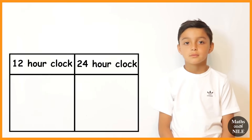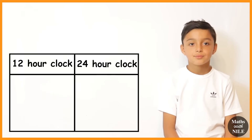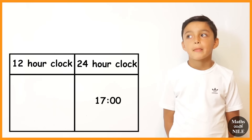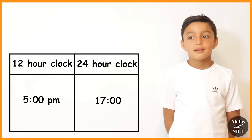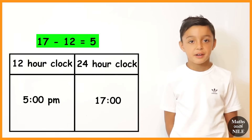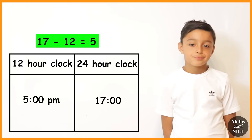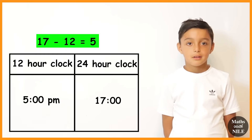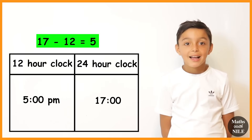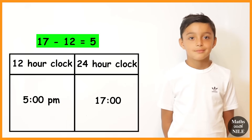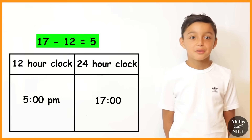What about changing from 24-hour to 12-hour clock? For example, 1700 hours — what time is that using the 12-hour clock? 5 p.m. Basically you just take away 12 and then add a.m. or p.m. So you've done 17 take away 12, and then put a.m. or p.m. How do you know it's p.m.? Because it's in the afternoon — it's gone past 1200 hours. Very good correction.